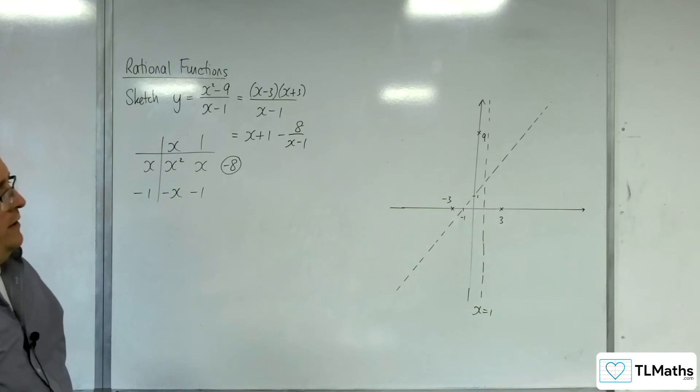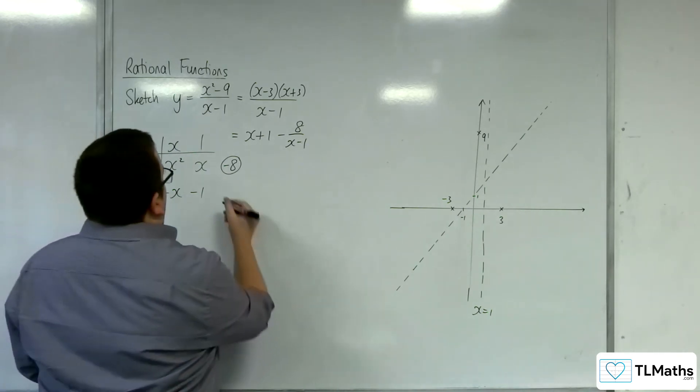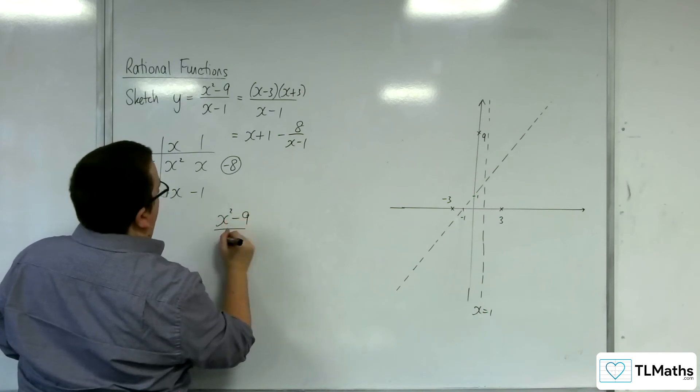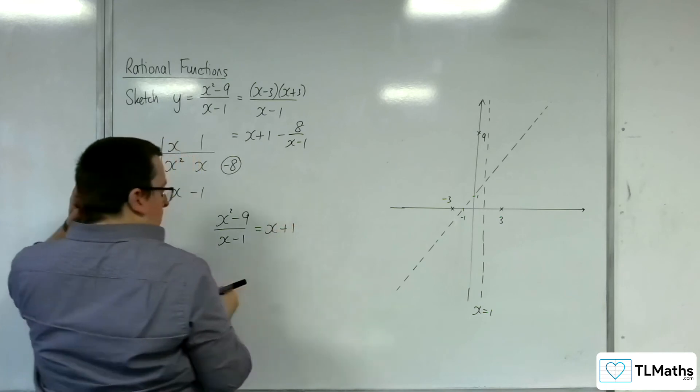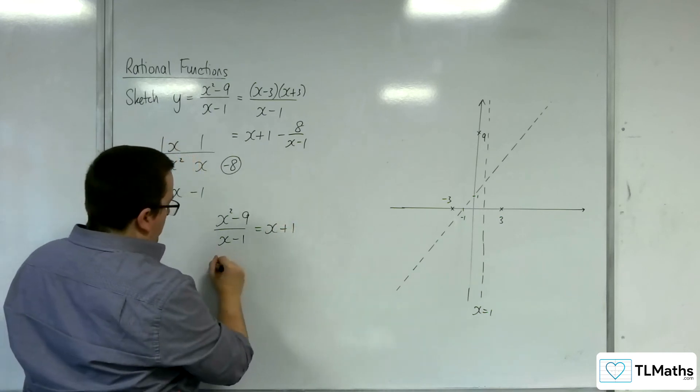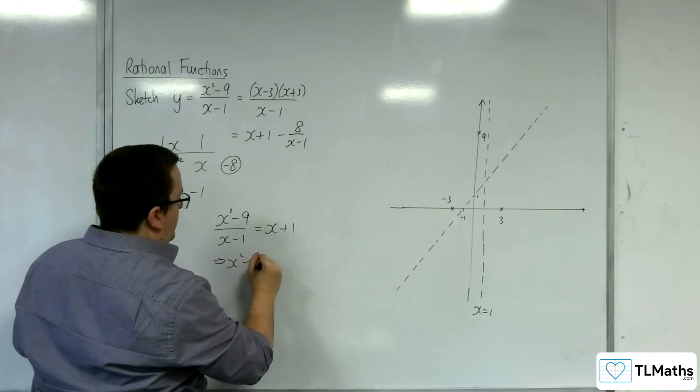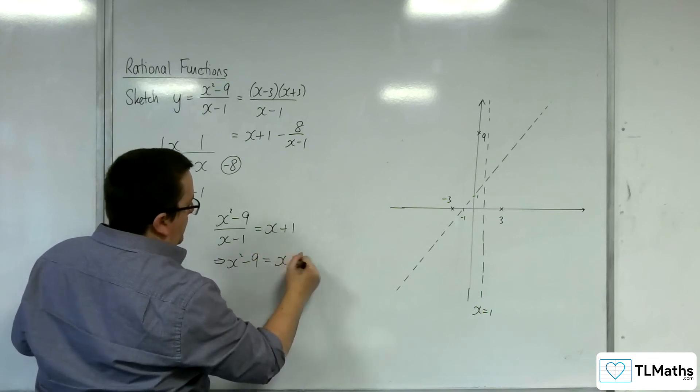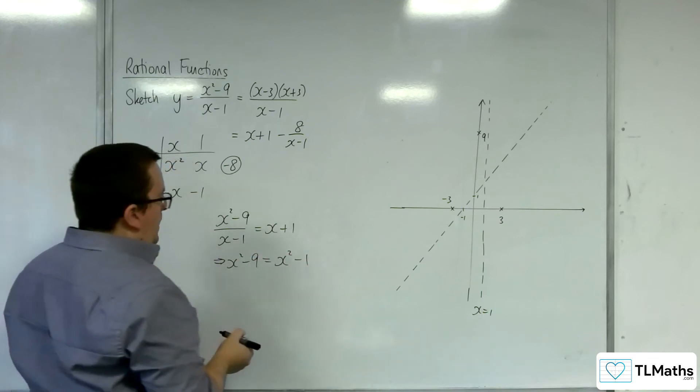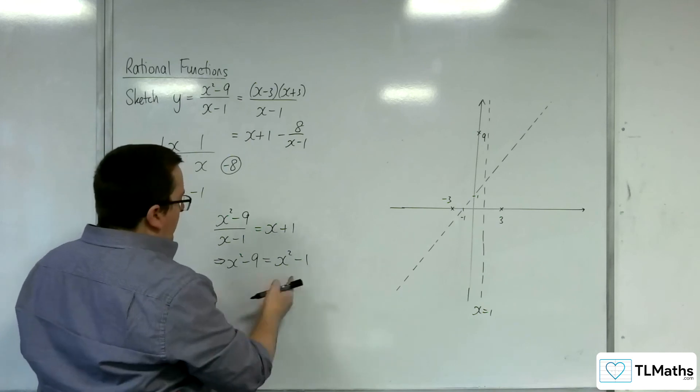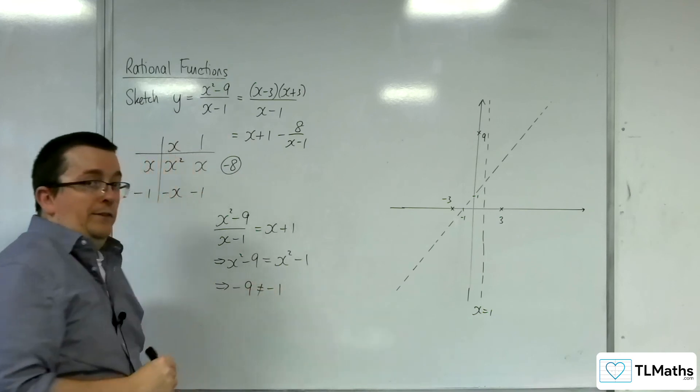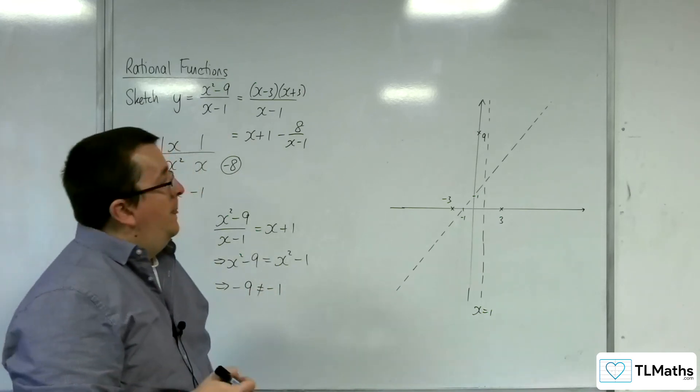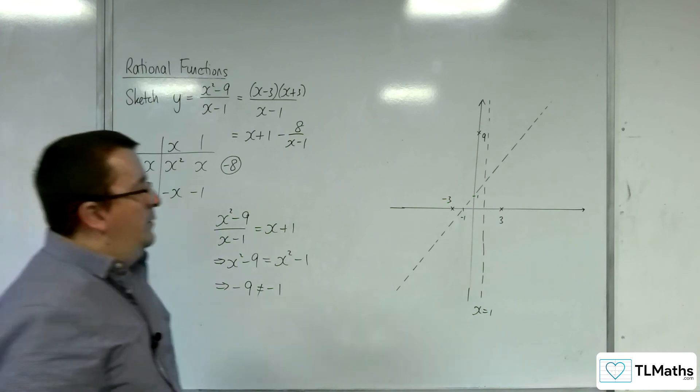Now we should check whether the curve crosses the oblique asymptote. So we're going to put the x squared take away 9 over x take away 1 equal to x plus 1. So multiply up both sides by the x take away 1. We get x squared take away 9 is equal to x squared take away 1. So difference of two squares there. The x squares cancel from both sides, and that would mean that minus 9 would have to be equal to minus 1, which it clearly isn't. And so the curve doesn't cross that oblique asymptote.